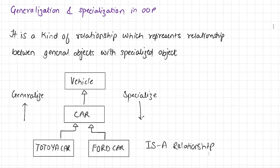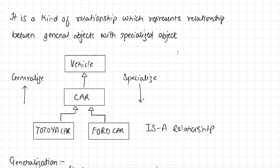Let's begin with the very first question: what is Generalization and Specialization in Object Oriented Programming? It is a kind of relationship which represents the relationship between General Objects and Specialized Objects. The best way to understand this is using a real world example. If you look around, you will see a lot of Vehicles nearby. A Vehicle is a thing used to transport people or goods from one location to another location.